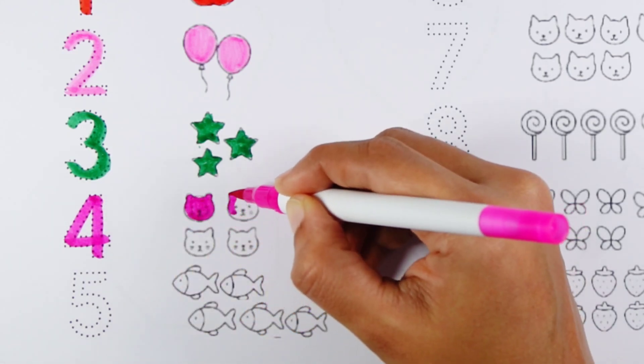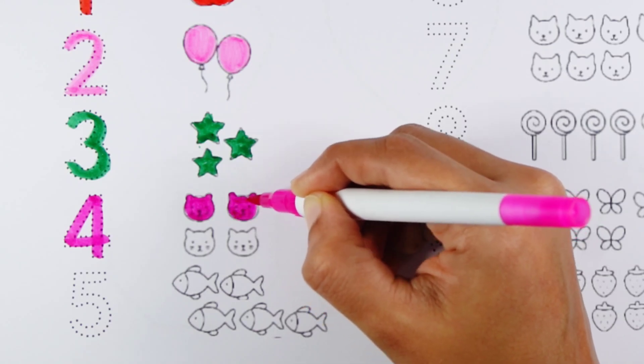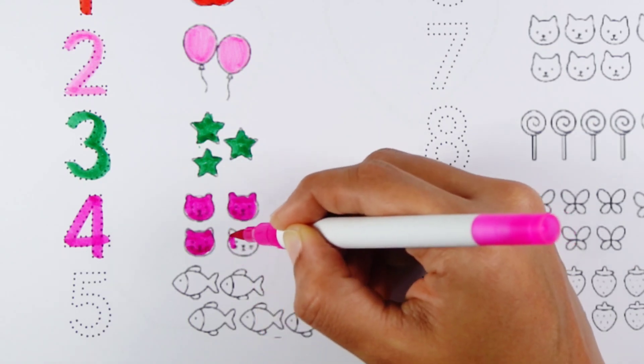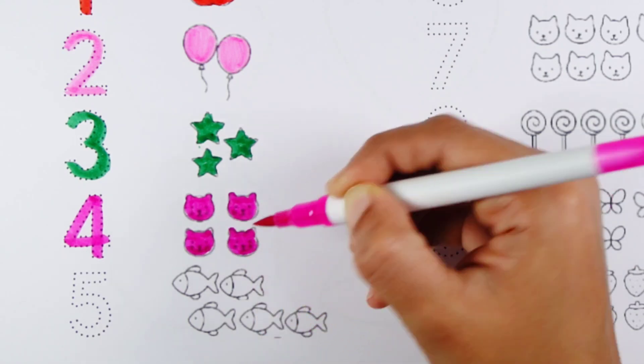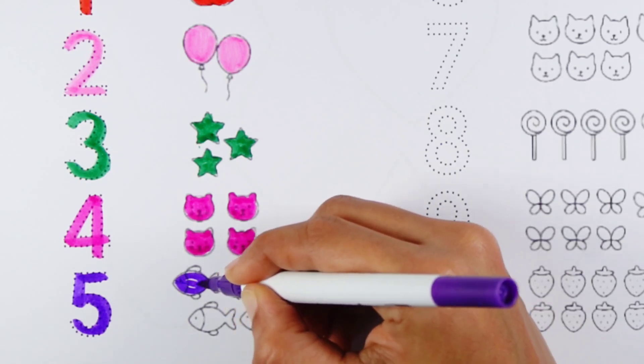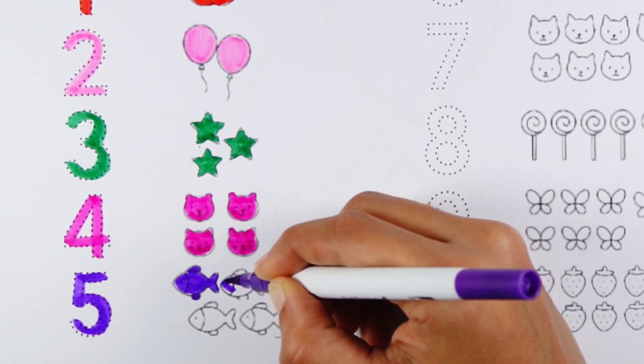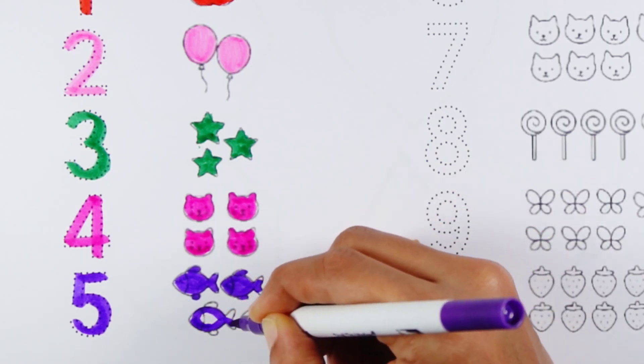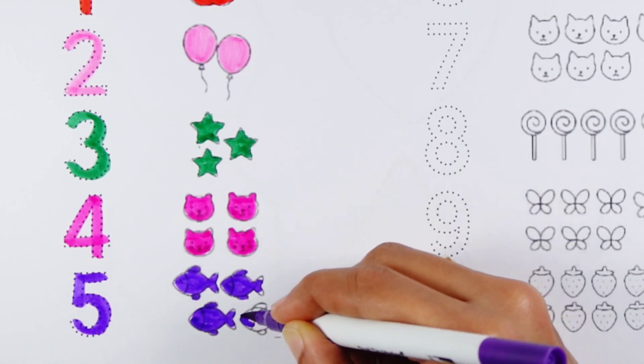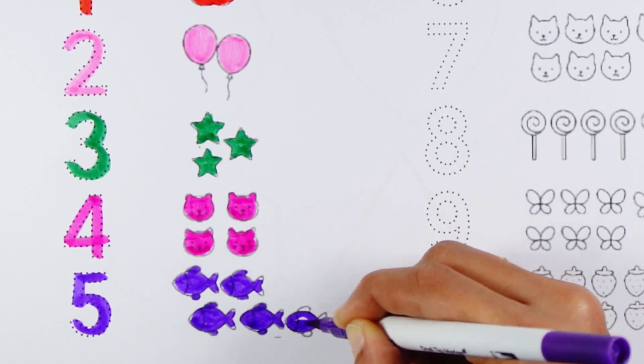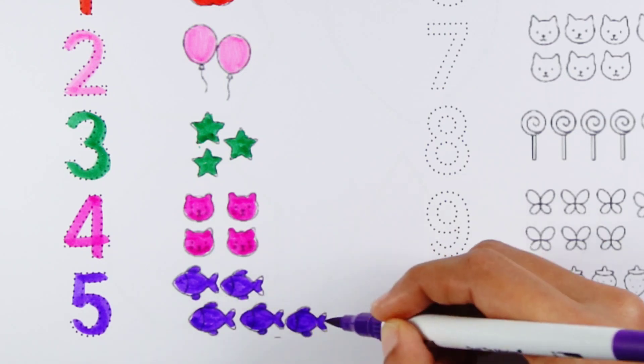Seven, eight, nine. One, two, three, four. Four cats. Four, five, six naughty little chicks. Seven, eight, nine. Number five. Five fishes.